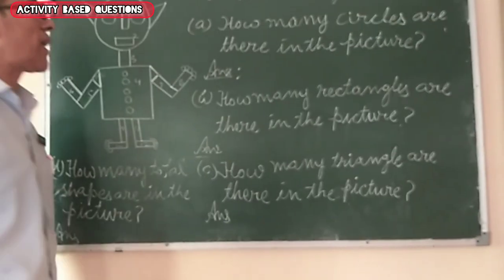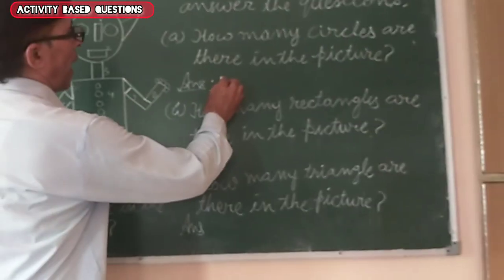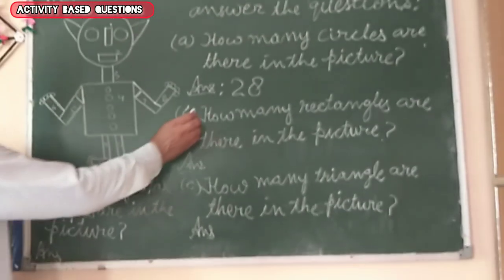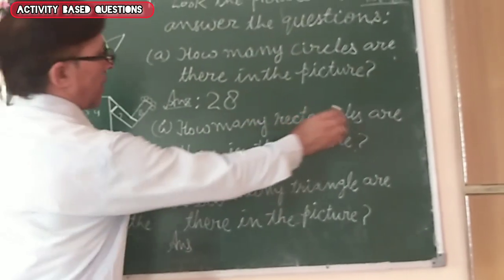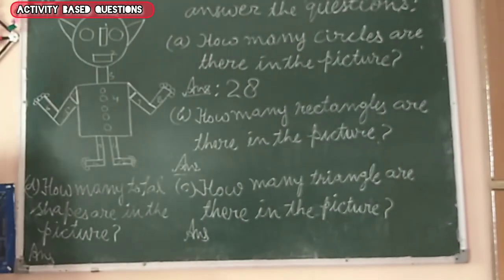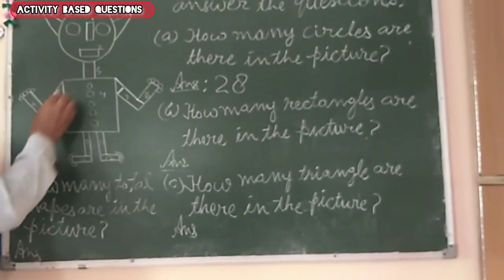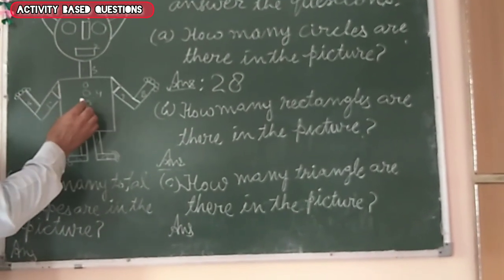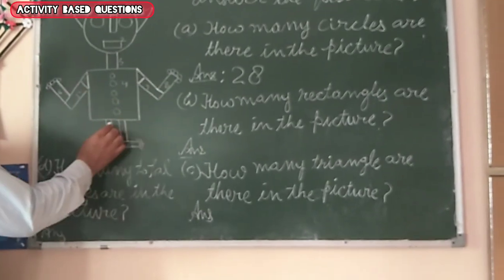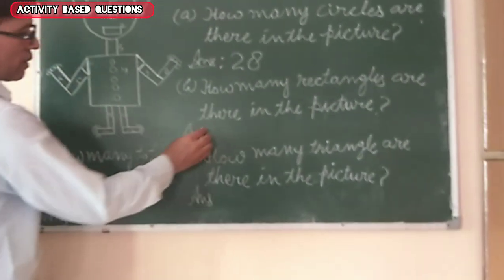How many circles are there in the picture? 28. Yes. Question number B. How many rectangles are there in the picture? Rectangle — 12. 1, 2, 3, 4, 5, 6, 7, 8, 9, 10, 11, 12.